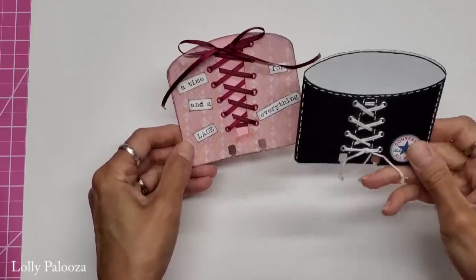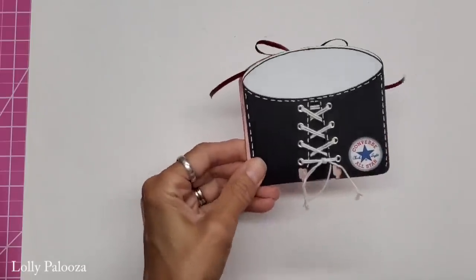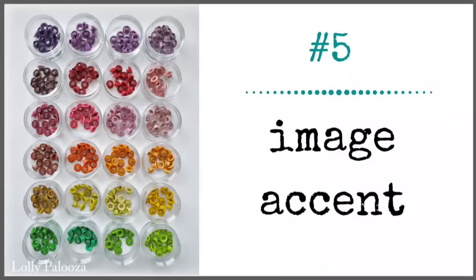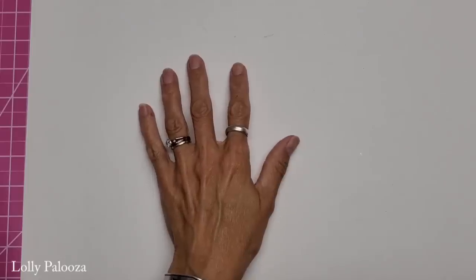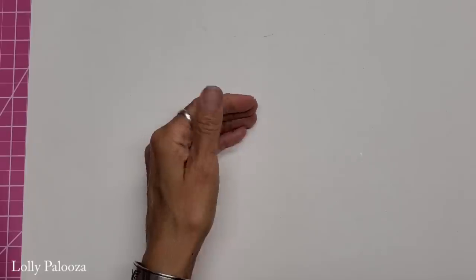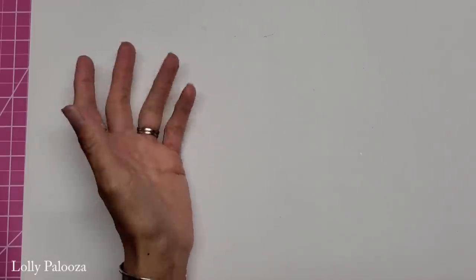I also did another one where the lacing went down, and this is baker's twine to make it look like a Converse sneaker. I have a tutorial on this, I believe. If I can find that tutorial, I will give you the link down below. No pattern required. I just show you how to make this one. So lacing on paper, very fun.